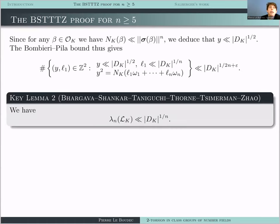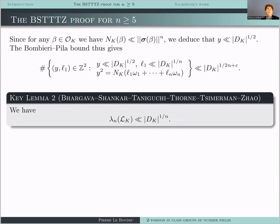Key Lemma 2 says that our lattices coming from number fields cannot be just any lattices. In particular, the largest successive minimum lambda_N has to be smaller than D_K^{1/N}. For a general lattice with N-1 very small independent vectors and one very large vector, lambda_N could be as large as the determinant. But for lattices coming from number fields this cannot happen, because O_K is actually a ring — you can multiply elements and stay in O_K — and this forces lambda_N to be at most D_K^{1/N}. Key Lemma 1 was a consequence of Minkowski's first theorem; Key Lemma 2 is a consequence of Minkowski's second theorem.